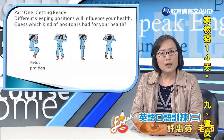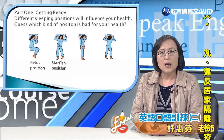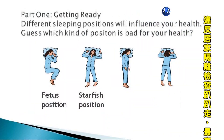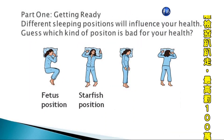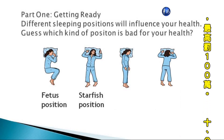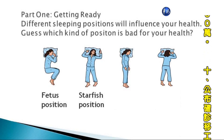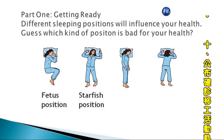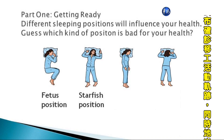The second one is starfish position. In this position, you sleep on your back. 你是仰睡的姿勢。And your arms are outspread. 你的手臂是往外延的，這個像類似海星的睡姿。